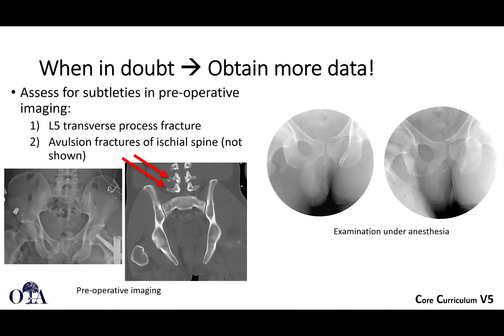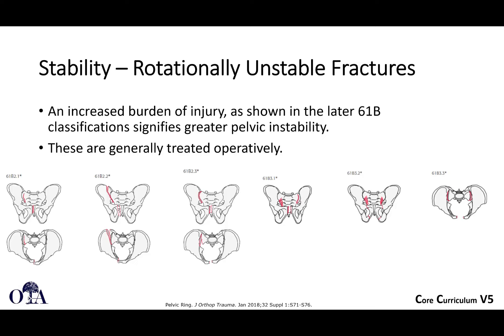Other things to look for include L5 transverse process fractures and avulsion fractures of the ischial spine. On stress imaging, you can see overriding with a lateral-to-medial directed force, demonstrating how the pubic ramus fracture and obturator ring shorten compared to the contralateral side. Many of these rotationally unstable injuries are often treated operatively.